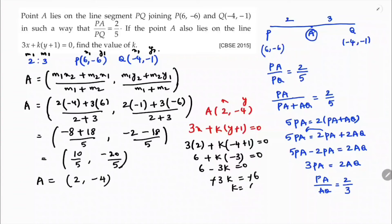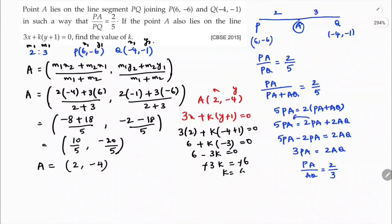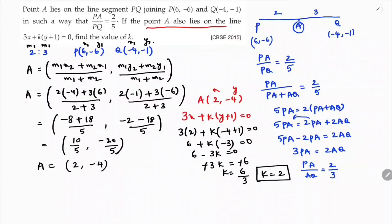So 6 - 3k = 0. Transposing 6 to the other side: -3k = -6, so k = 6/3 = 2. The value of k is 2. To summarize: first find point A which divides PQ in ratio 2:3, then substitute coordinates of A into the line equation to get k = 2.